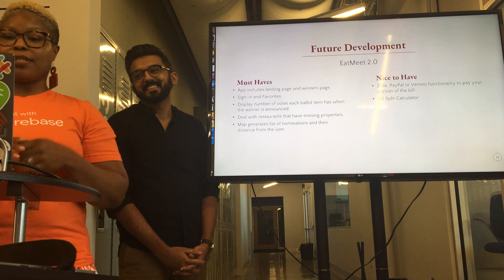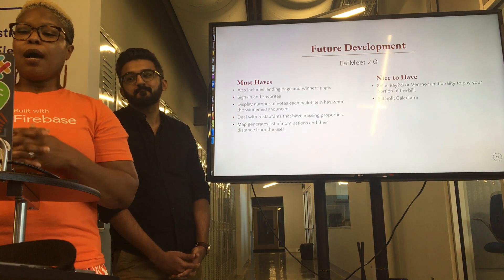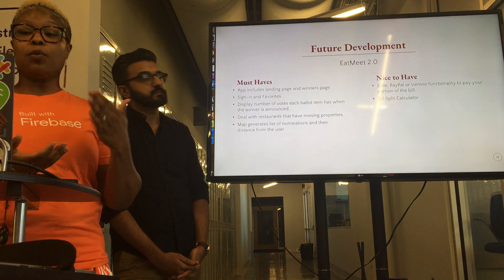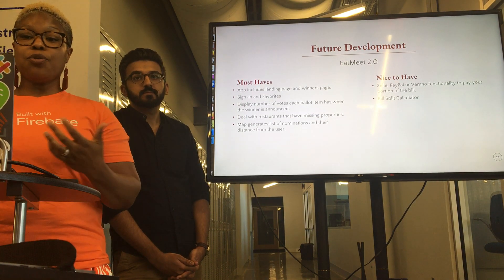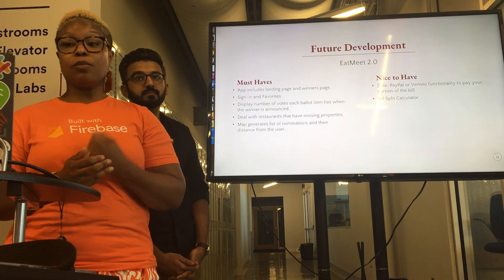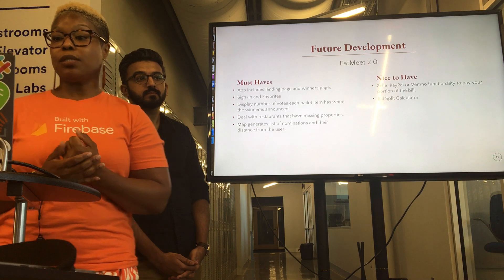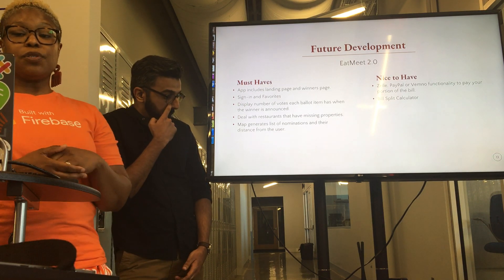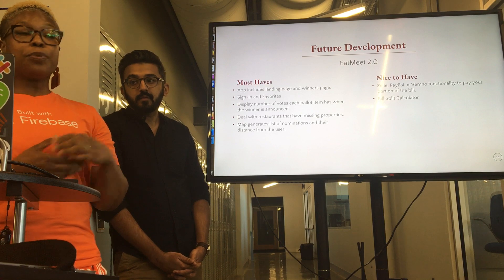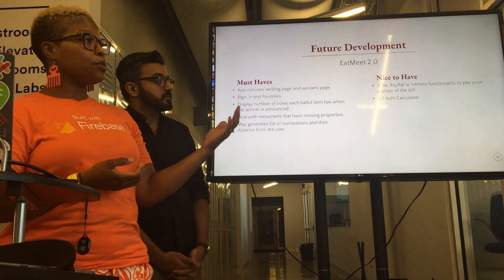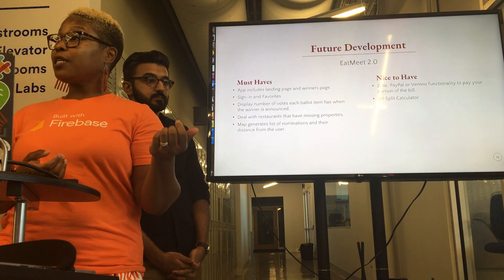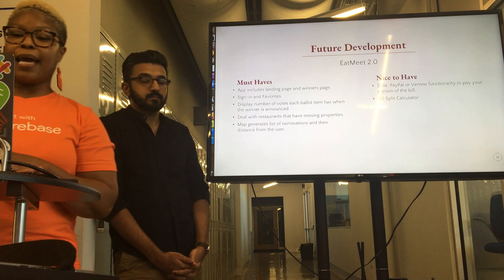For future implementation, we want to have a landing page, and a winner's page where you can see who won. We also want to integrate Firebase authentication, which is actually pretty sweet, and add favorites so you can save your favorite restaurants. When the ballot comes up, we want a modal that tells you who won and displays how many votes each restaurant received.